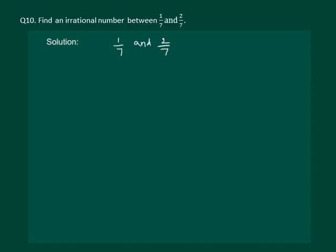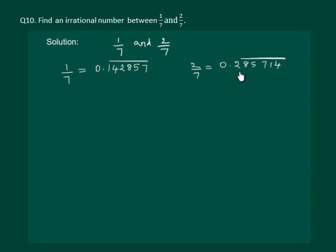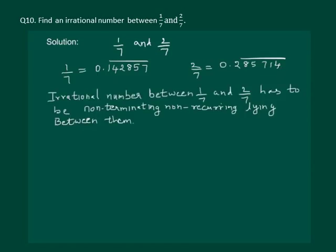To solve such questions we need to first expand the given rational numbers. We will find that 1 by 7 is equal to 0.142857 bar, and 2 by 7 is equal to 0.285714 bar. Now an irrational number between 1 by 7 and 2 by 7 has to be a non-terminating non-recurring number lying between the two decimal numbers.